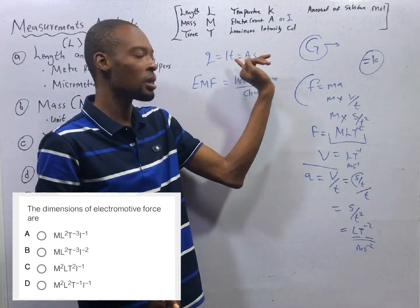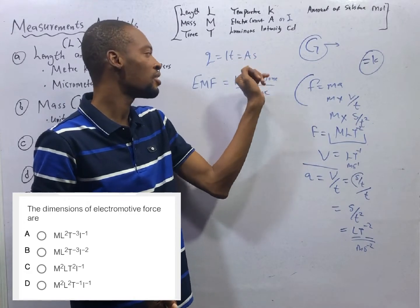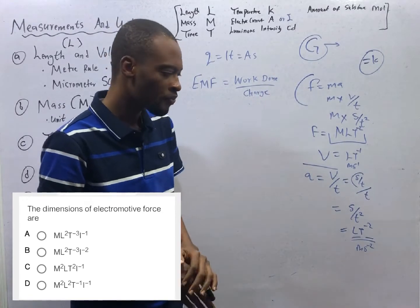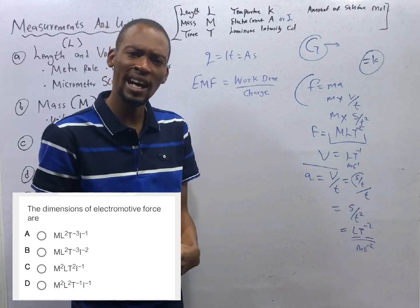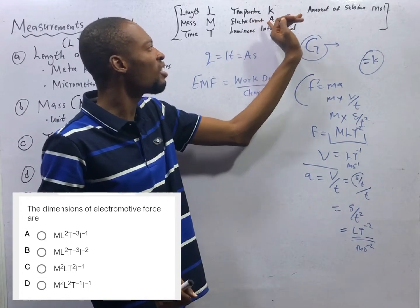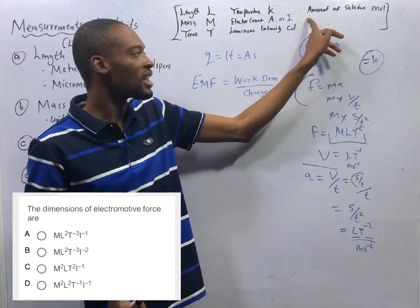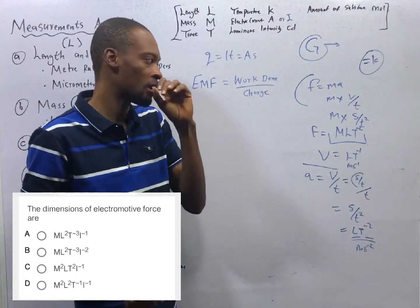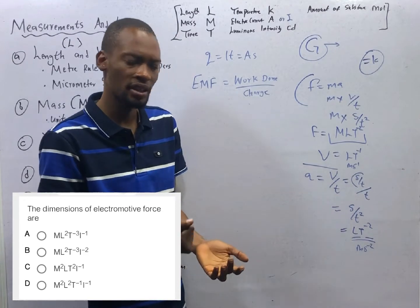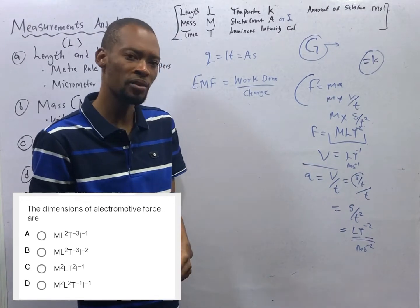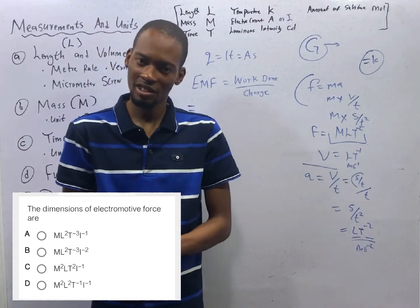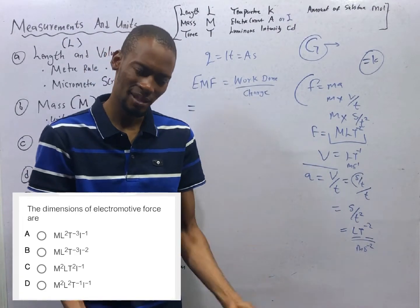And what is charge? Charge is current times time. Current times time is charge. Charge is a derived quantity. Work done is a derived quantity. And now, we have a formula or dimension of this. The dimension for electric current is ampere or I. You can use either A or I. Take note of that. If you see questions where you see I instead of A, know that we are still talking about current. And what is the rule? Convert all the derived quantities to fundamental quantities.